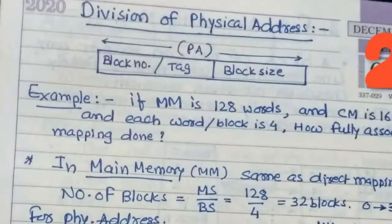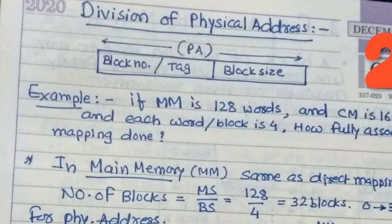First we see the division of the physical address for fully associative mapping. In direct mapping, the physical address has three parts: tag, line number, and block size. But here there are two parts: one is the block size and second one is the block number or tag. We can understand this by example.